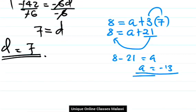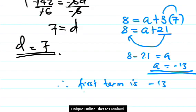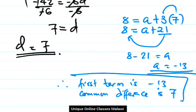So we have our first term as negative 13, whereas the common difference is 7. Therefore, the first term is negative 13 and the common difference is 7.